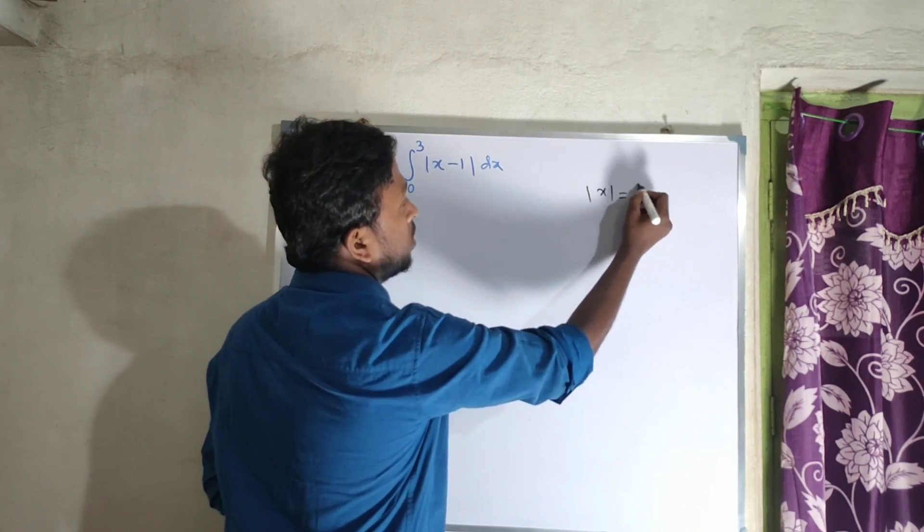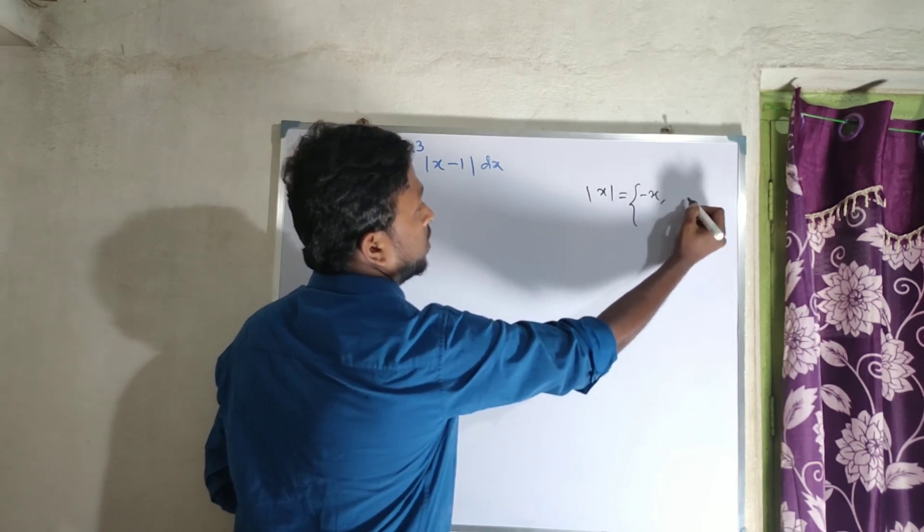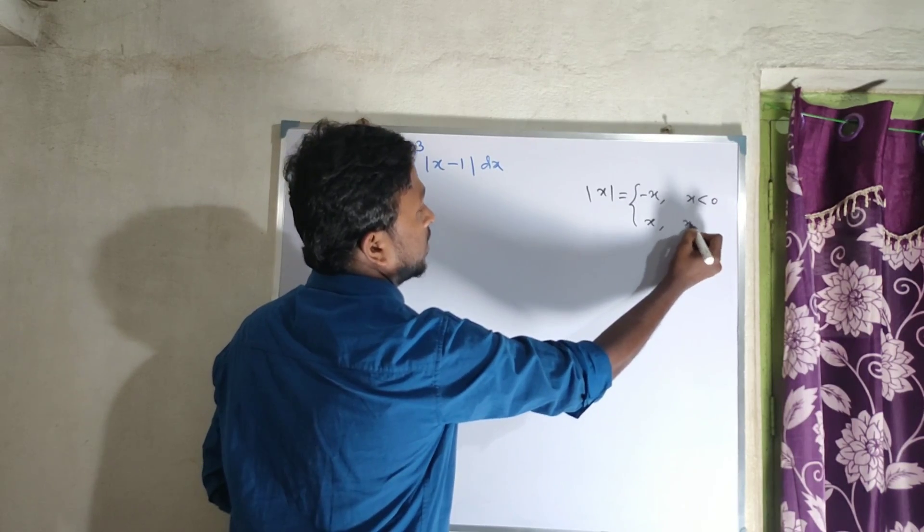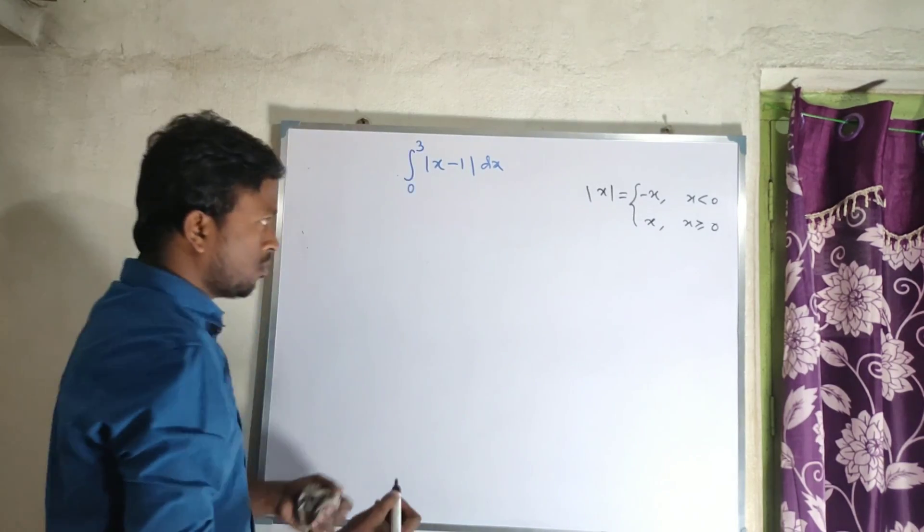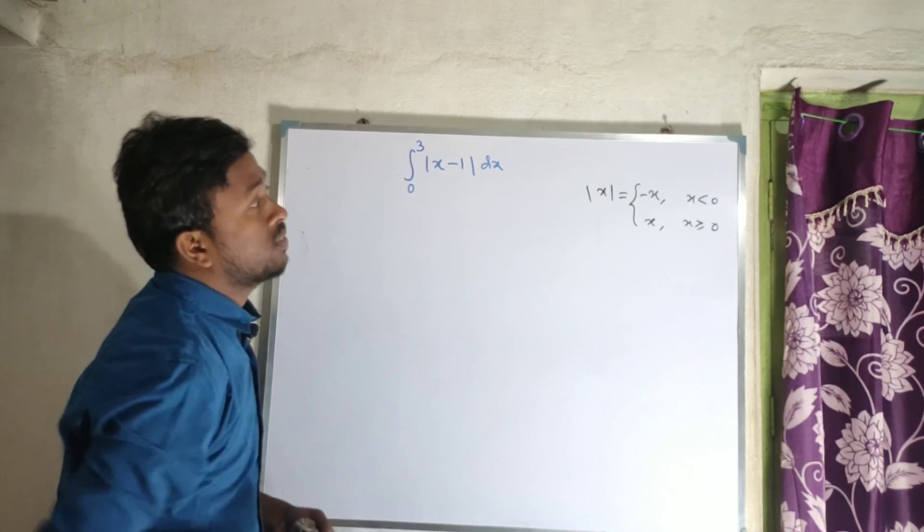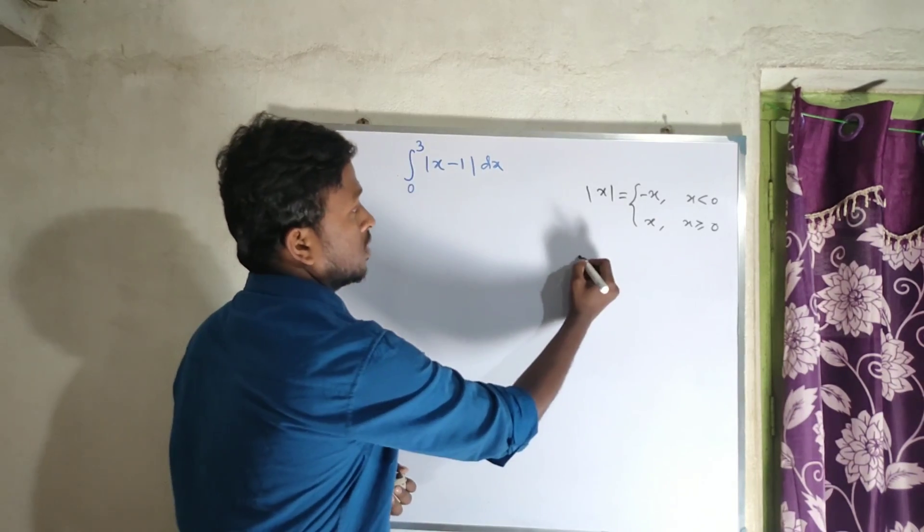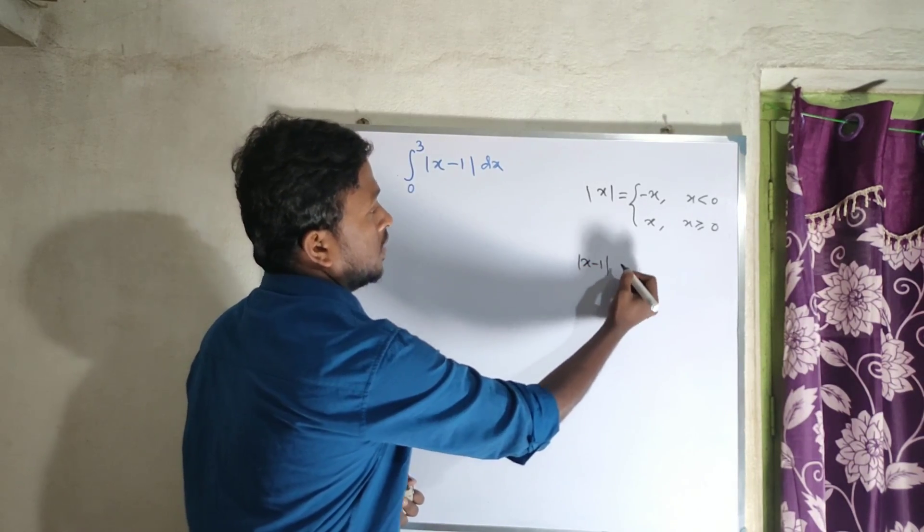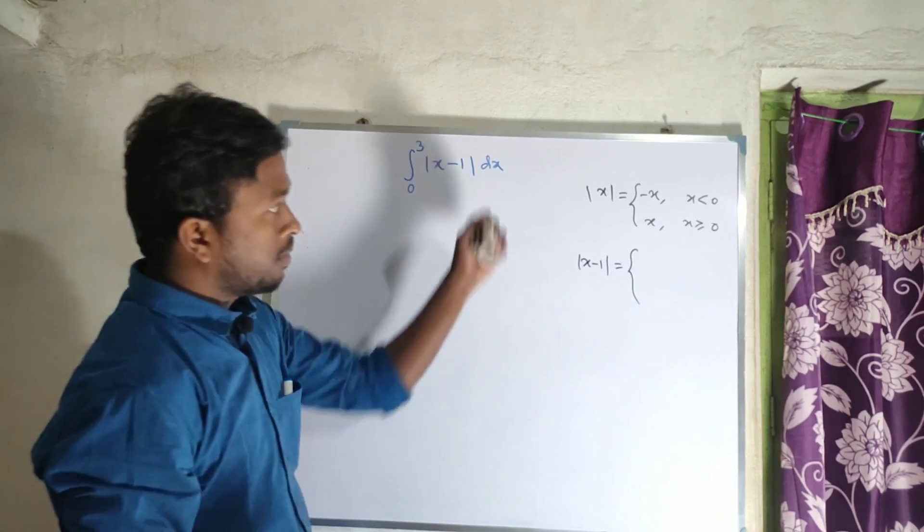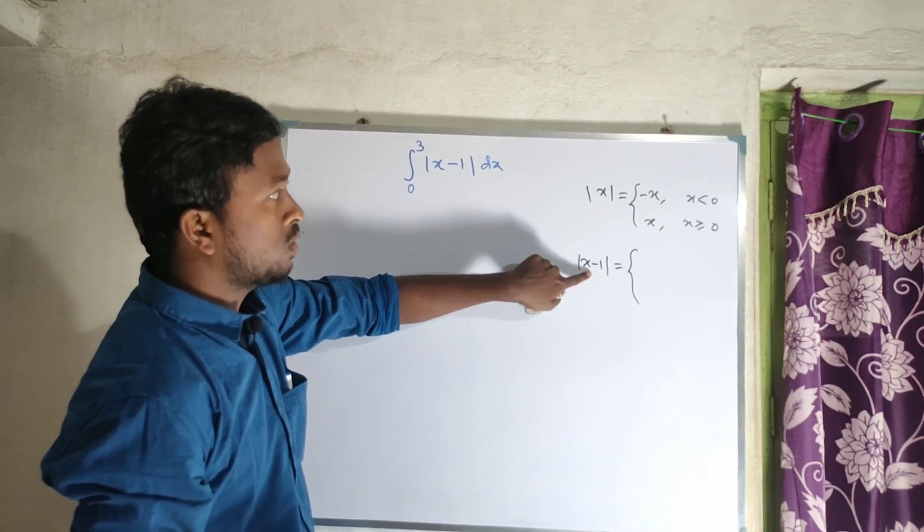The mod x definition is: mod x equals minus x when x is less than zero, and x when x is greater than or equal to zero. So for mod of x minus one, the definition will be based on x minus one.